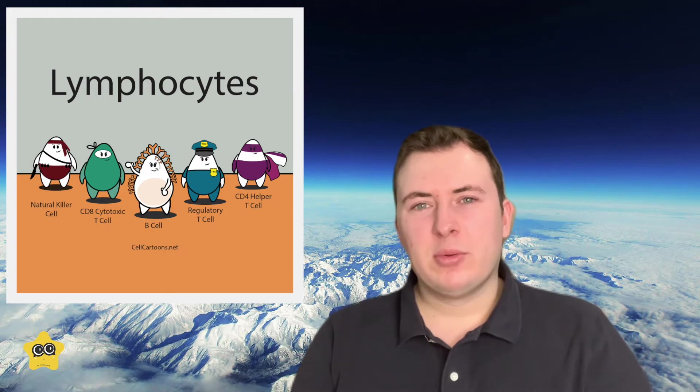NK cells go through our body and detect general signs of immune stress, such as inflammation, whereas T cells and B cells go through our body with their specialized receptors and detect foreign substances.